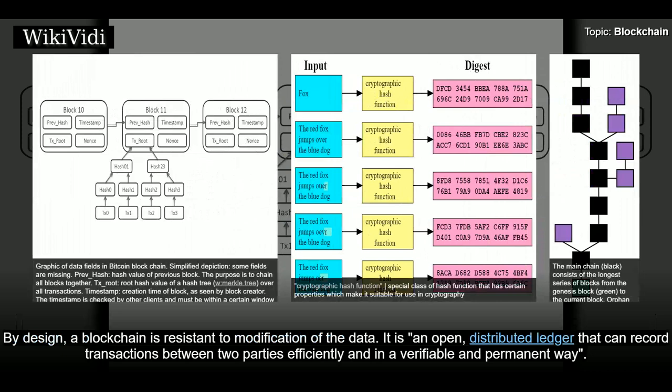By design, a blockchain is resistant to modification of the data. It is an open, distributed ledger that can record transactions between two parties efficiently and in a verifiable and permanent way.